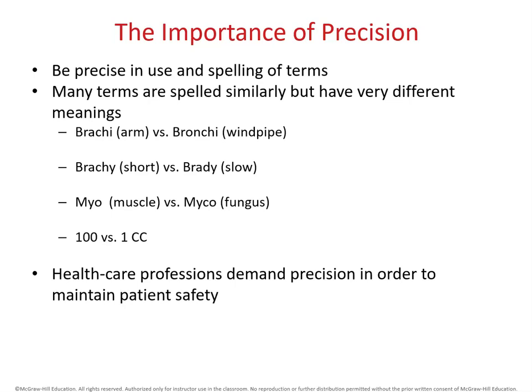In Anatomy and Physiology, and especially if you go into any field involving patient care, it's absolutely essential that you are very precise with your language, your writing, your numbers, and your spelling. There are some really common mistakes that get made. For instance, brachii and bronchi sound very similar and are spelled similarly, but they mean totally different things — arm and windpipe.